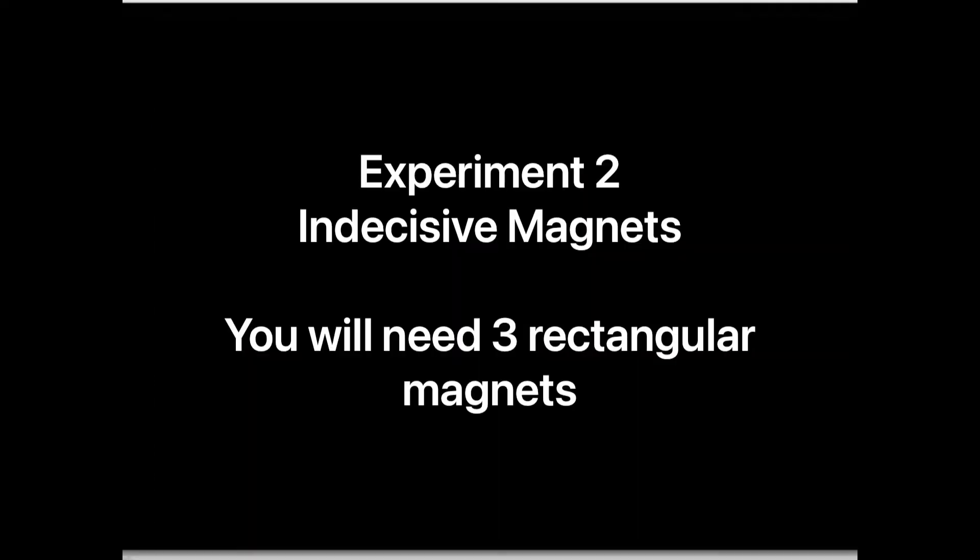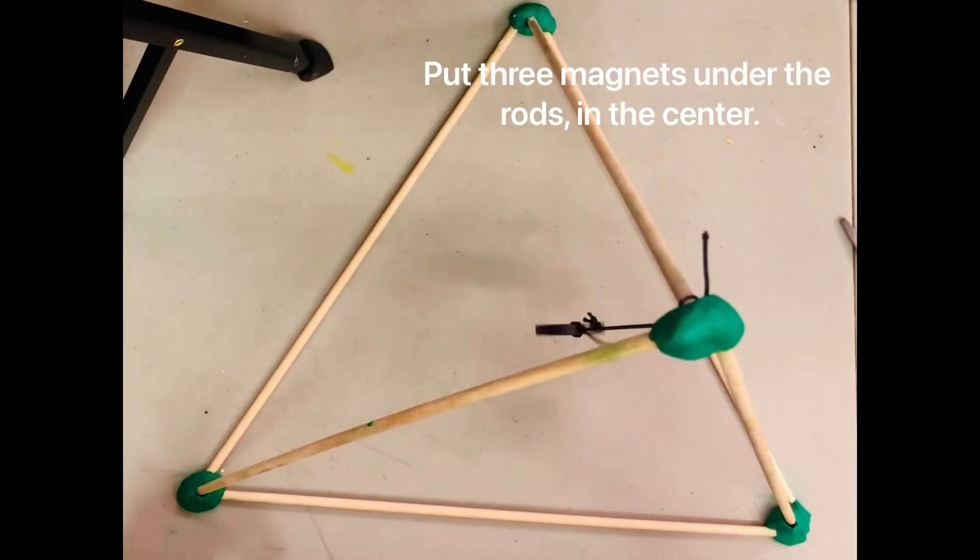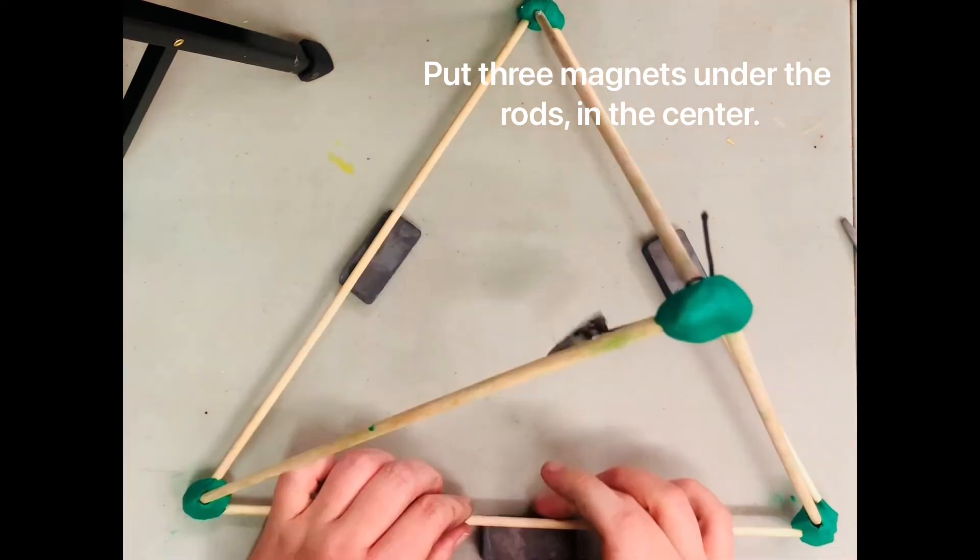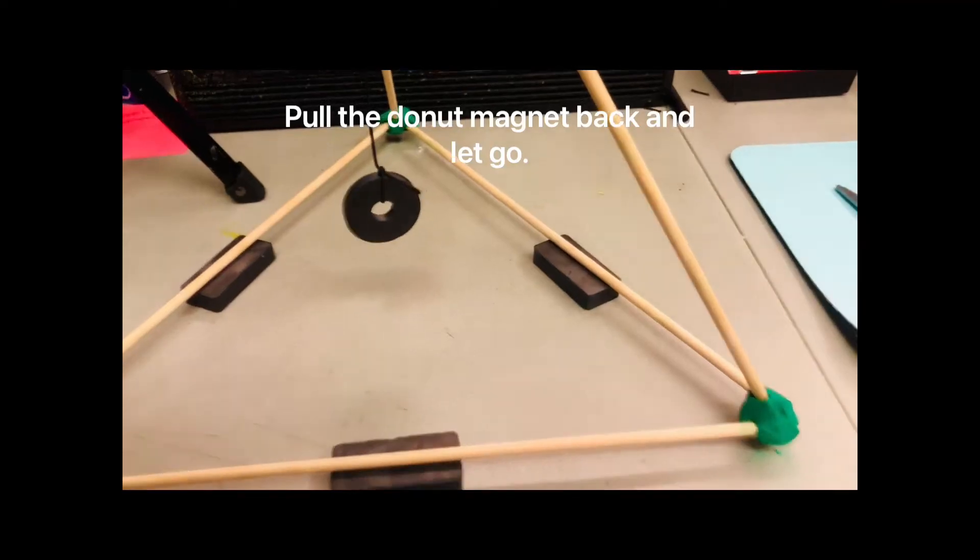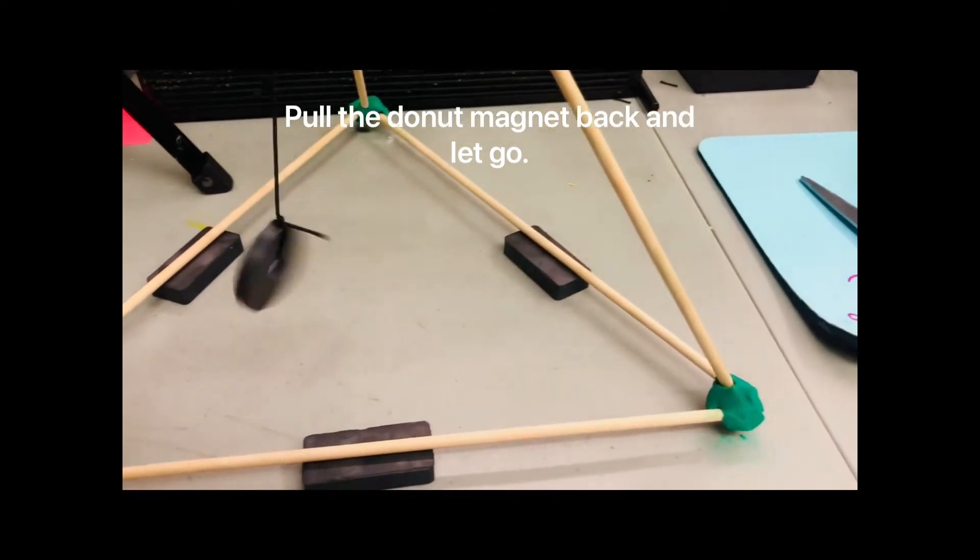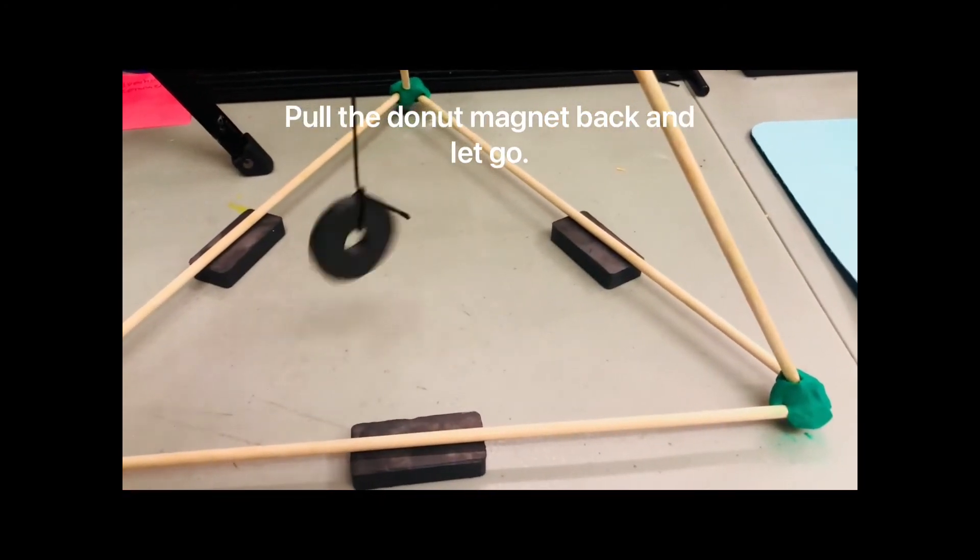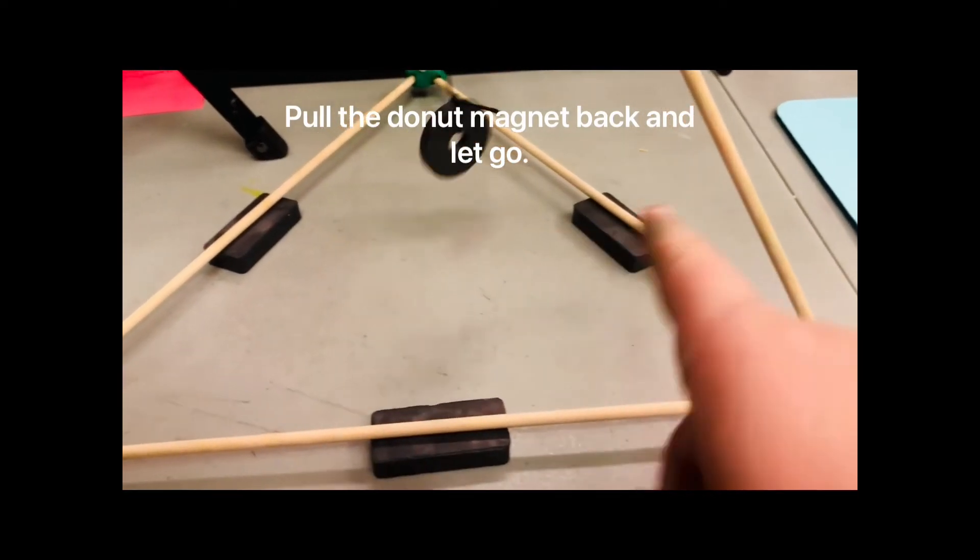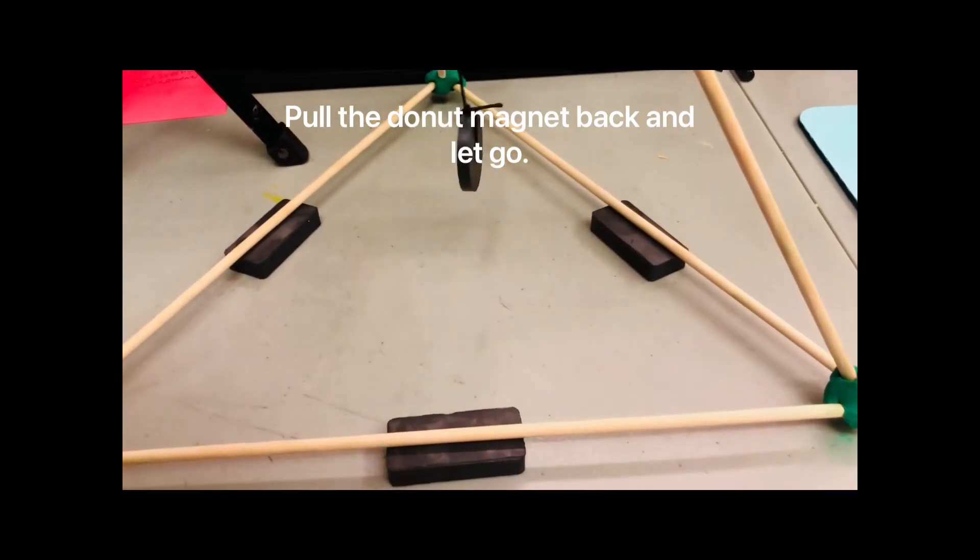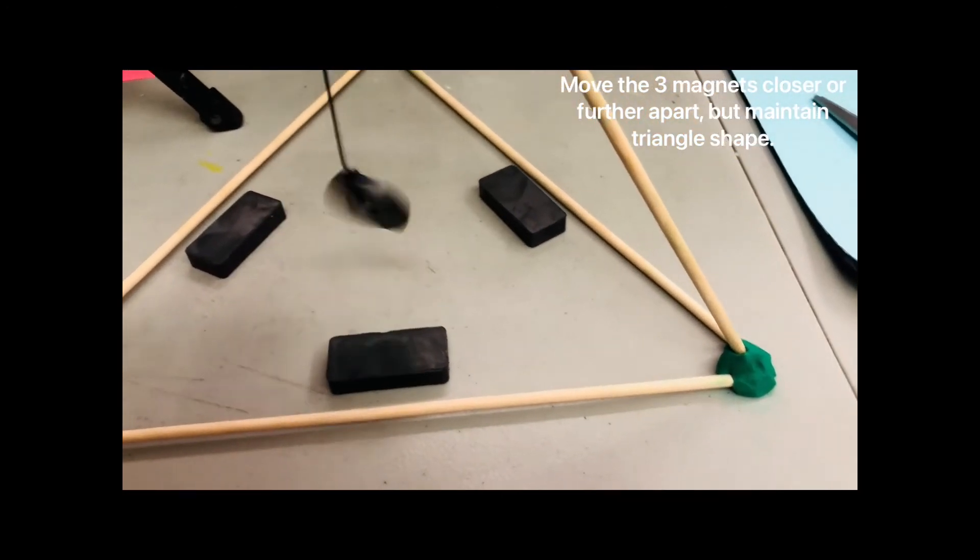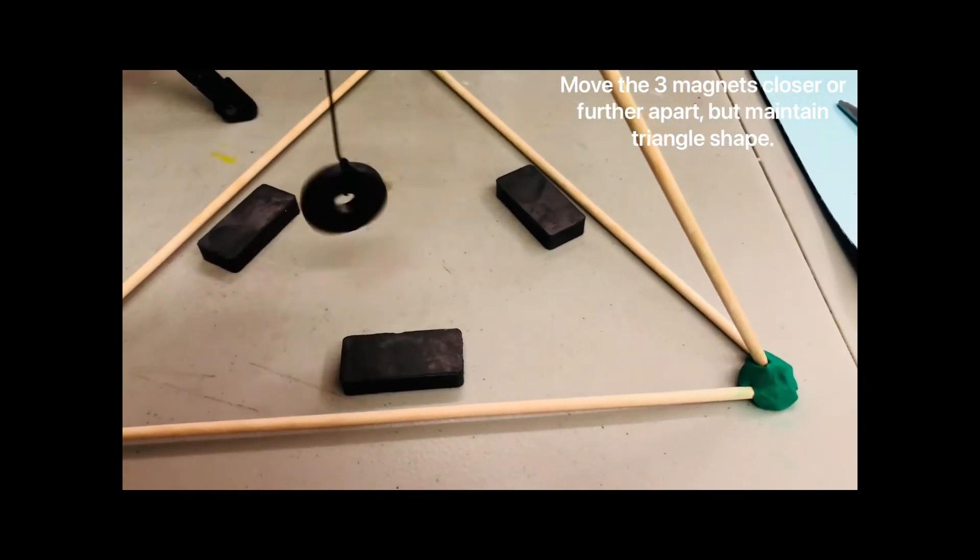For our second experiment you will need three magnets. Put the magnets under the three rods and make sure you keep them centered under each rod. Pull the donut magnet back and let it go. Watch as the magnet is pulled between each of the three magnets. Move the magnets closer or farther maintaining the triangle shape and again pull and let go.